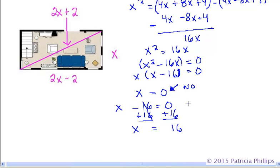Now, what you can do is you can go back up and insert 16 into the other expressions. For example, 2 times 16 minus 2. 2 times 16 is 32 minus 2 would equal 30. And the other one says 2x plus 2. So 2 times 16 plus 2. 2 times 16 is 32 plus 2 equals 34.